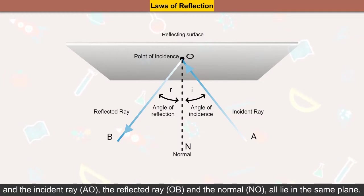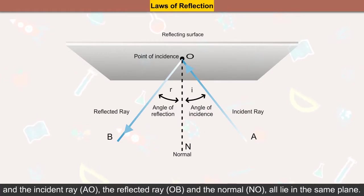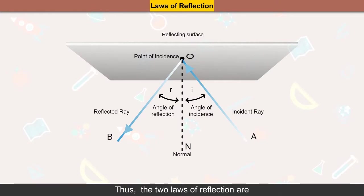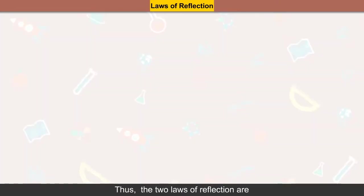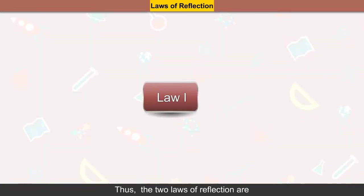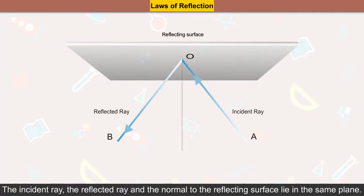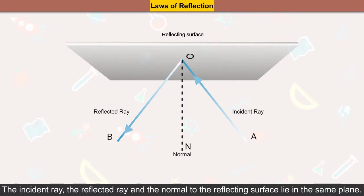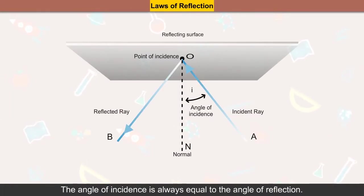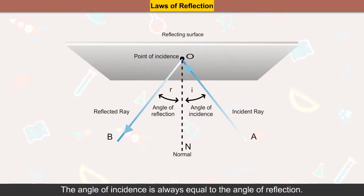The incident ray AO, the reflected ray OB, and the normal all lie in the same plane. Thus, the two laws of reflection are: Law 1 — the incident ray, the reflected ray and the normal to the reflecting surface lie in the same plane. Law 2 — the angle of incidence is always equal to the angle of reflection.